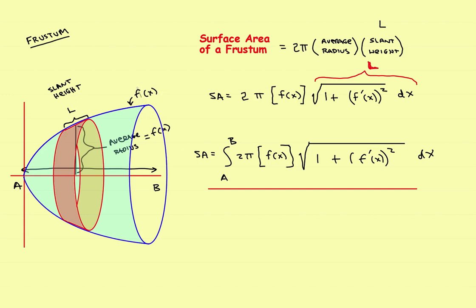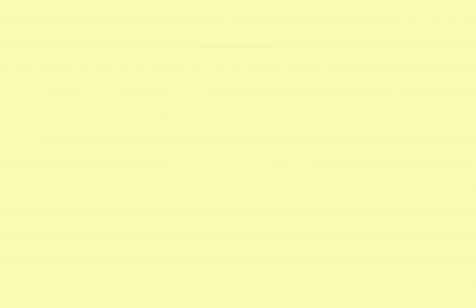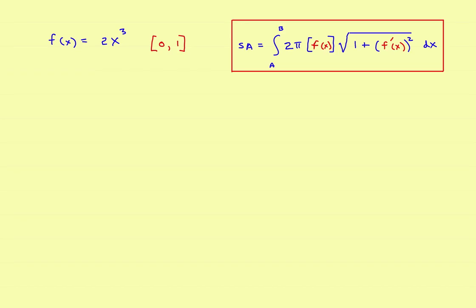With that formula in mind, let's take a look at an example. We'll work through one problem completely. Suppose we have the function f(x) = 2x³, and we want to find the surface area if you roll this around the x-axis on the interval from 0 to 1. Start with the formula.